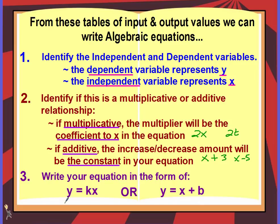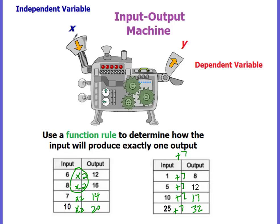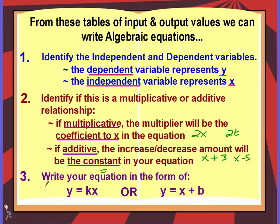There are two forms you can write. An equation must have an equal sign. We're solving for y — we know x, and y is what we're solving for. So in our linear equation, it's always going to be y equals. y equals k times x if it's multiplicative, or y equals x plus b if it's an additive relationship.